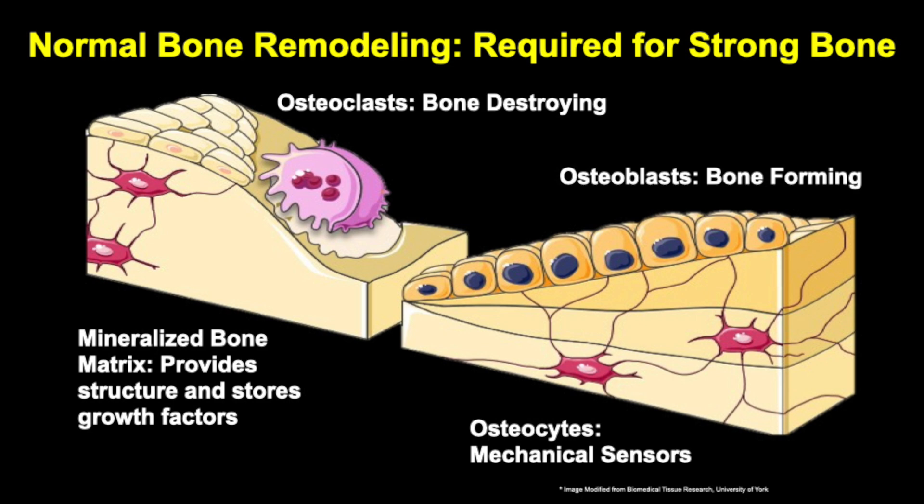The osteoclasts, which are large cells that destroy bone. The osteoblasts, which are large cells that form bone. Those cells secrete a protein that is deposited into the bone matrix.